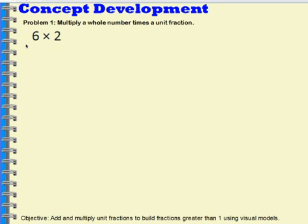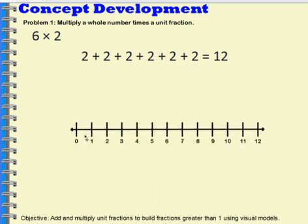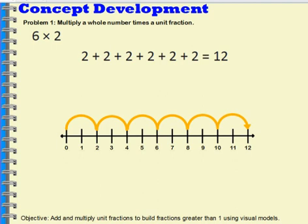Let's think about 6 times 2. What does 6 times 2 really mean? One of the ways we can express 6 times 2 to show the meaning is through an addition sentence: 2 plus 2 plus 2 plus 2 plus 2 plus 2 equals 12. It's showing that I have 6 twos. Another way we can show 6 times 2 is to represent it with a number line, showing 6 jumps each with a value of 2, which equals 12.